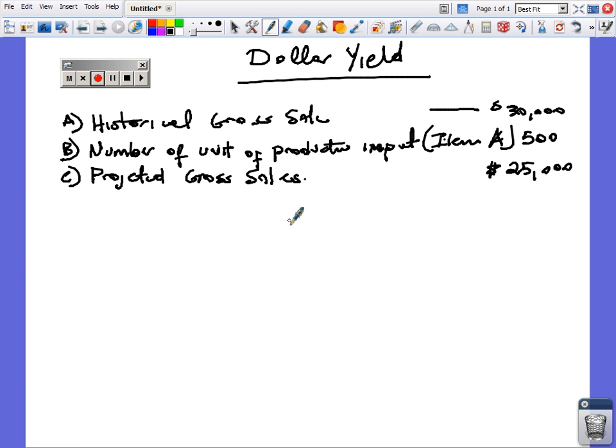And this process we're really trying to get at is the number of item A that is required or needed to make $25,000 in gross sale, assuming that from a historical perspective we use 500 units of item A to achieve $30,000 in sales.